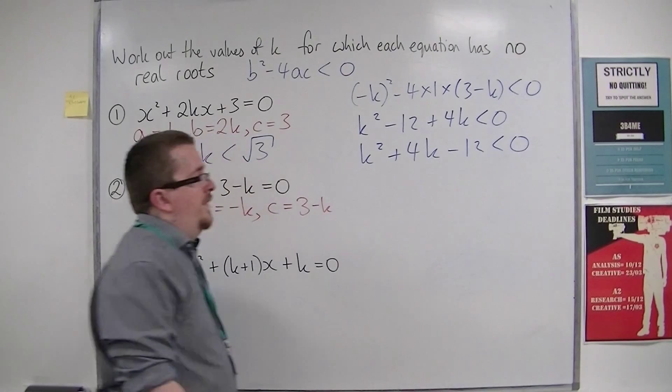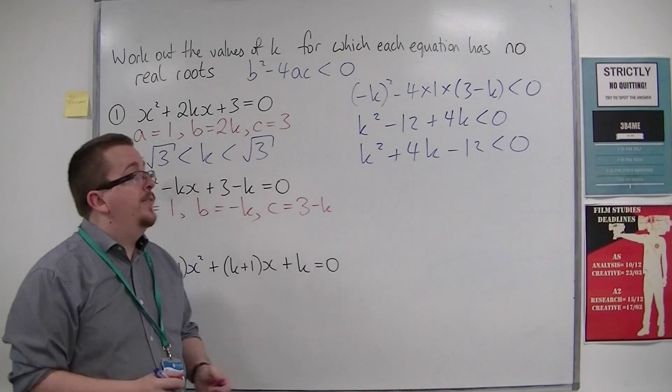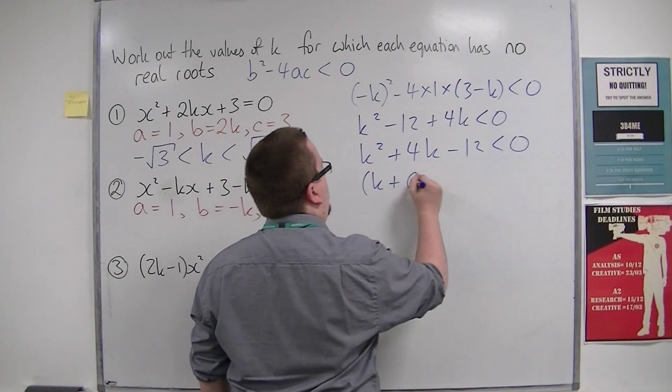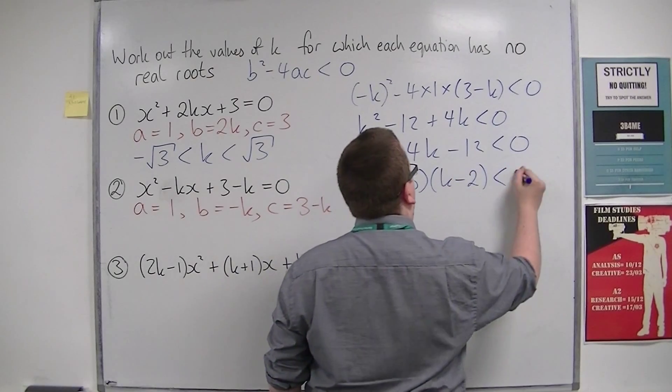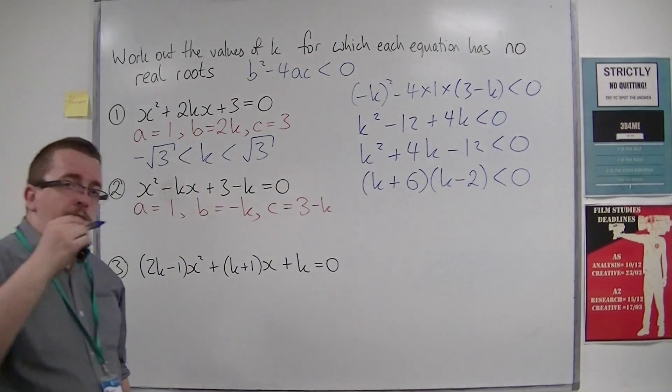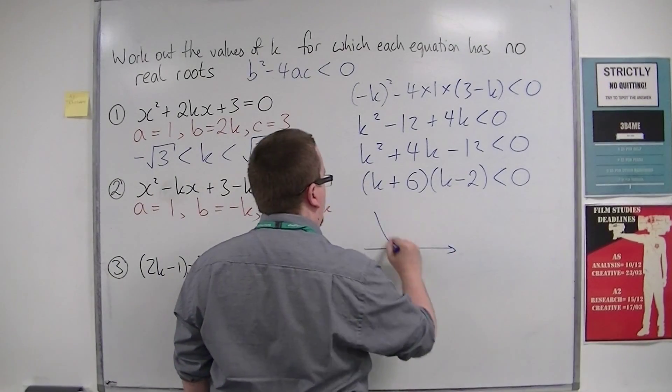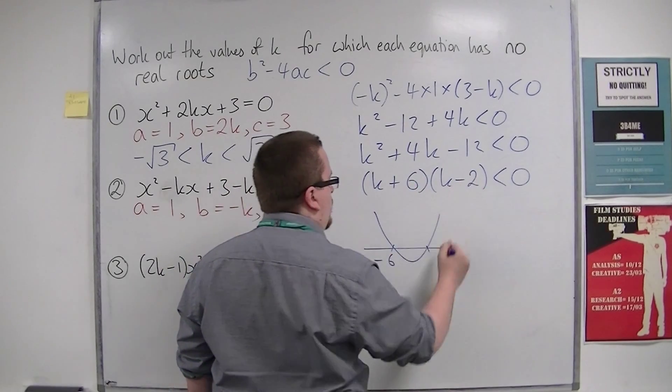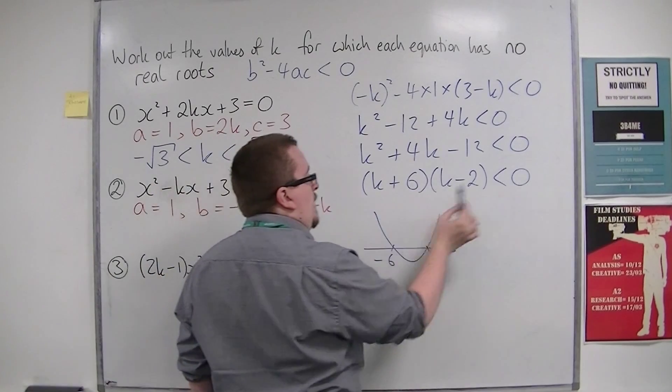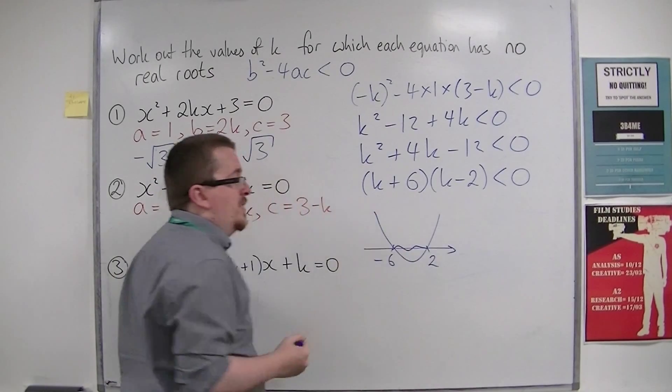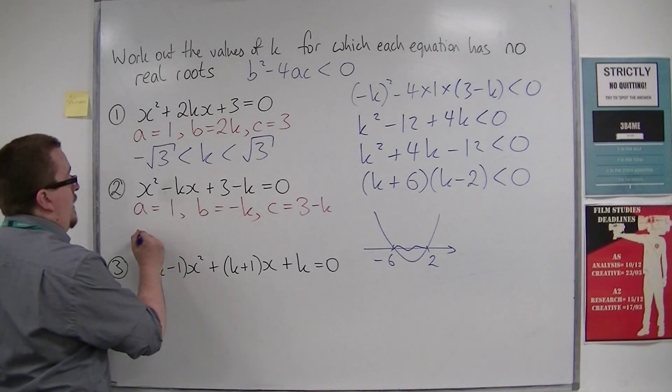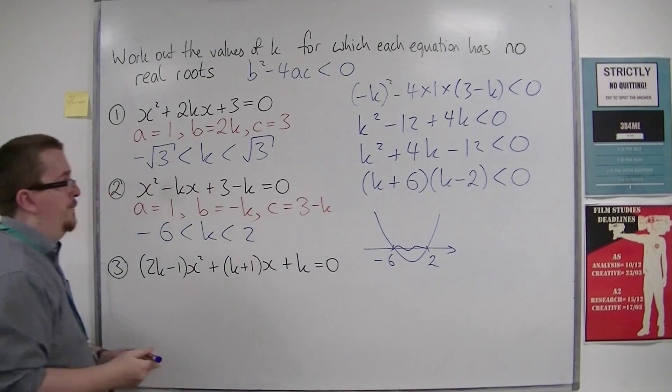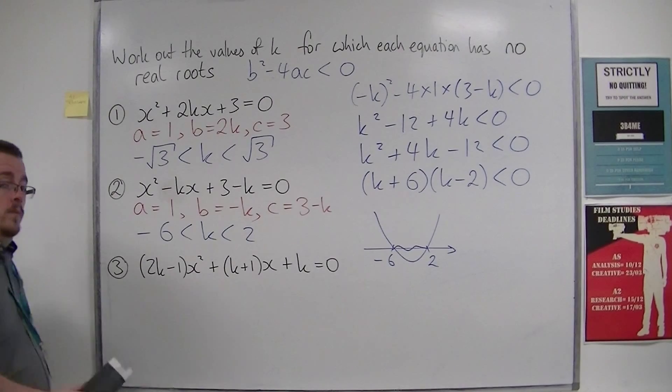This can be factorized, so that's (k + 6)(k - 2). Sketch the quadratic. We've got k = -6 from that bracket, and k = 2 from that bracket. Where is the parabola below the k-axis? It's below between those two values. So the solution is -6 < k < 2.